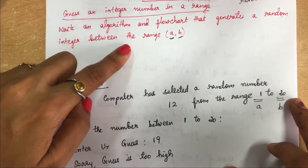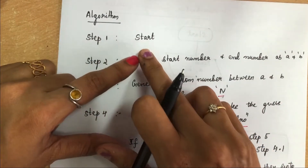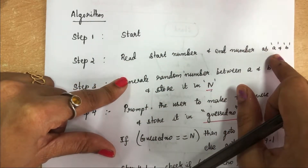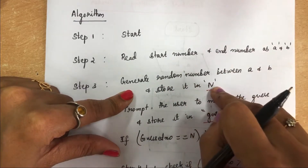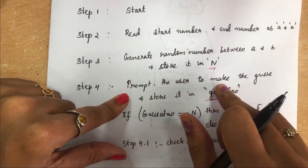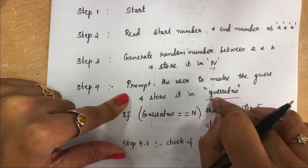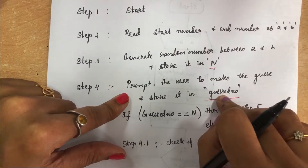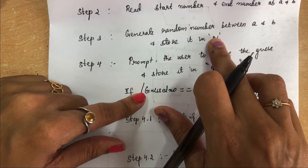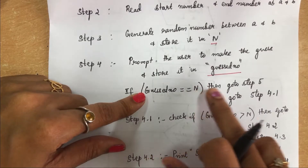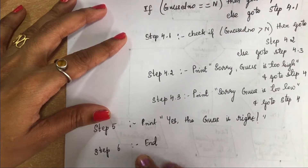Now we will write the algorithm and flowchart. Step 1: Start. Step 2: Read the starting number A and ending number B. Step 3: Ask the computer to generate a random number between A and B and store it in N. Step 4: Prompt the user to make a guess and store it in the variable 'guessed_number.' Step 5: Compare guessed_number with N. If they are equal, go to Step 5 — print 'Yes, the guess is right' and end the process.